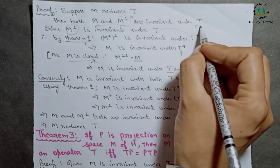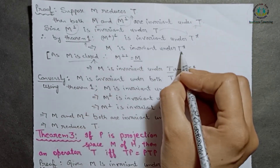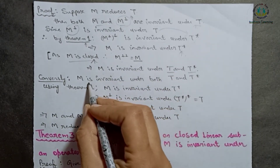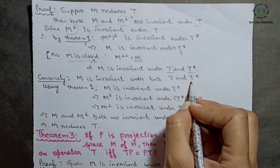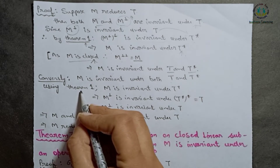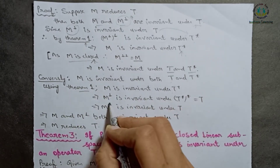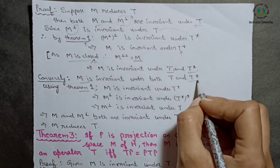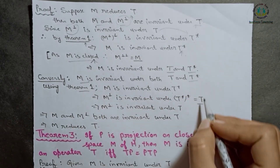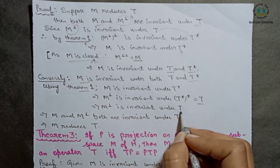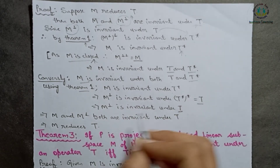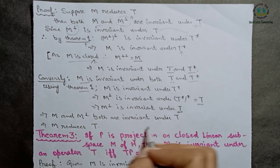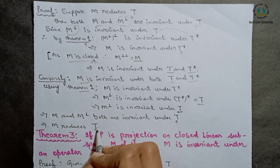This implies M is invariant under both T and T star. Conversely, assume M is invariant under both T and T star. We prove M reduces operator T. Using Theorem 1, since M is invariant under T star, M orthogonal will be invariant under T double star, that is T. So M orthogonal is invariant under T. Thus M and M orthogonal are both invariant under T, so by definition M reduces operator T.